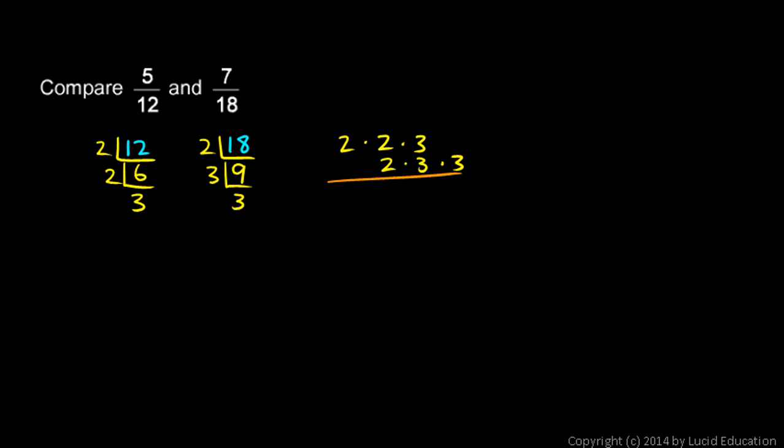And we take a number from each column there. We take a 2 times 2 times 3 times 3. And you might be able to see that that's 4 times 9, which equals 36. So that's our least common multiple, 36. We need to take each of these original fractions and rewrite them with a denominator of 36.